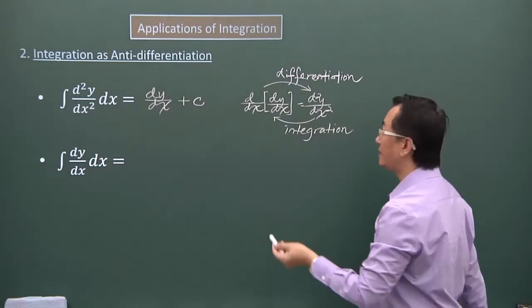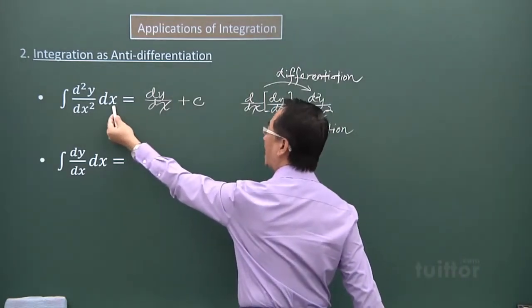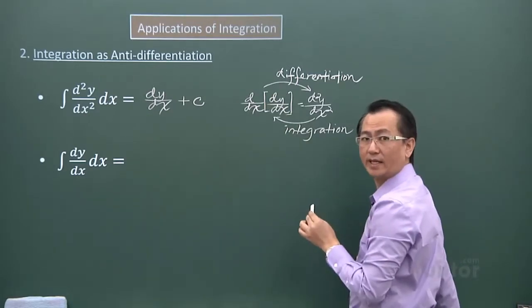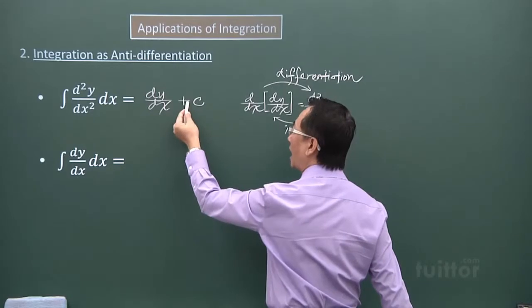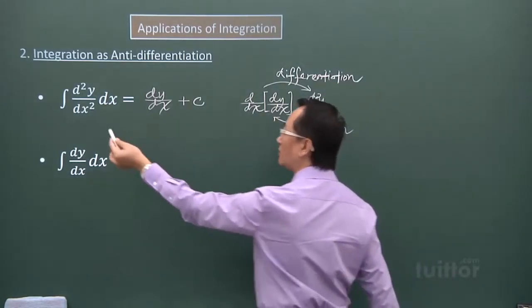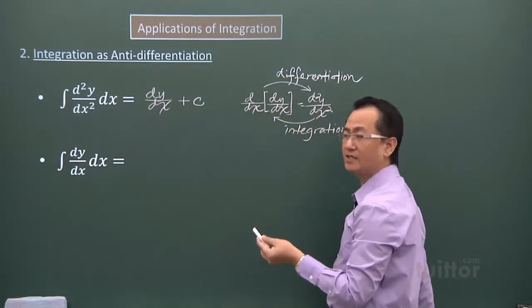That's why you can see here, if I integrate this with respect to x, I'll get back what's in the square bracket, the dy over dx. But I will also need to include a constant term because this is an indefinite integration.